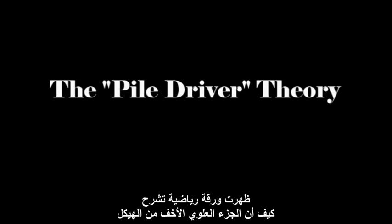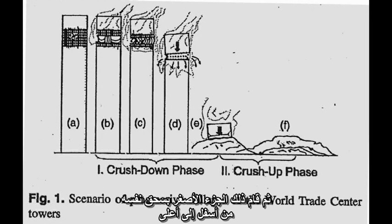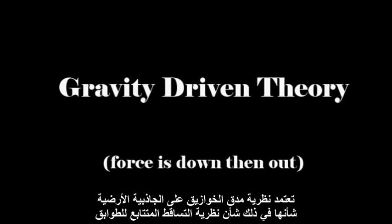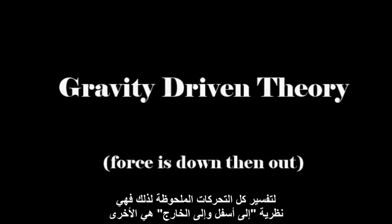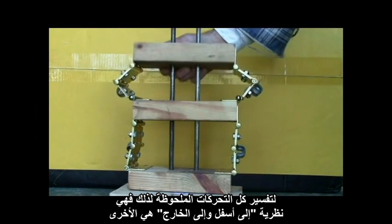A mathematical paper explained that the upper lighter part of the structure crushed the larger, stronger, lower part all the way down to the ground, and then the smaller section crushed itself back up. Like the pancake theory, the pile driver theory relies on gravity for all the motions observed, and hence is another down-and-out theory.